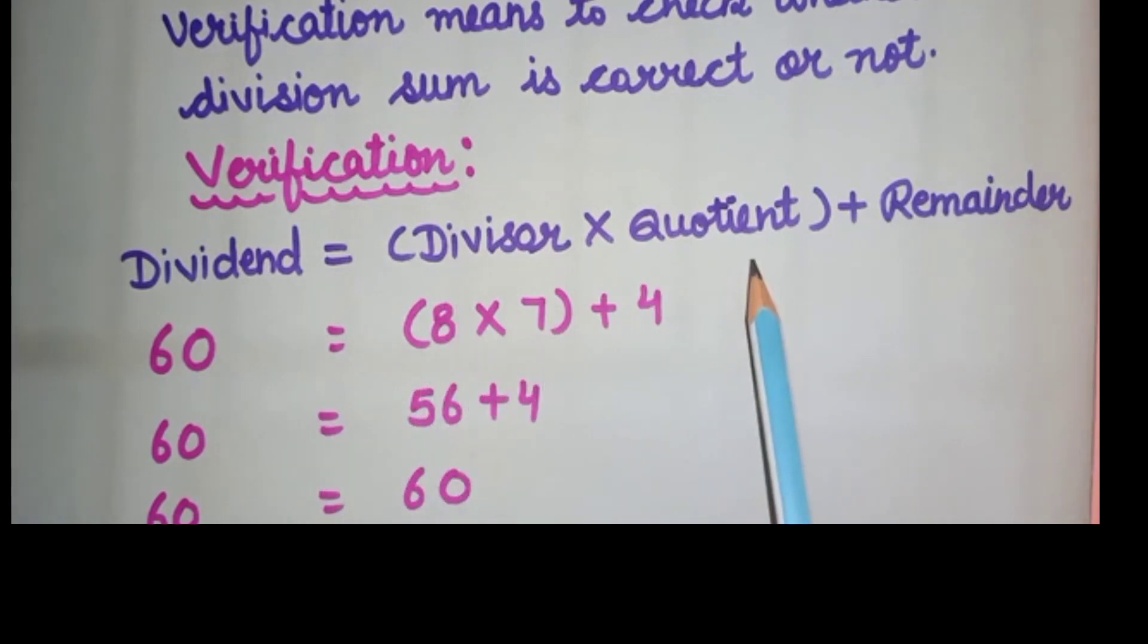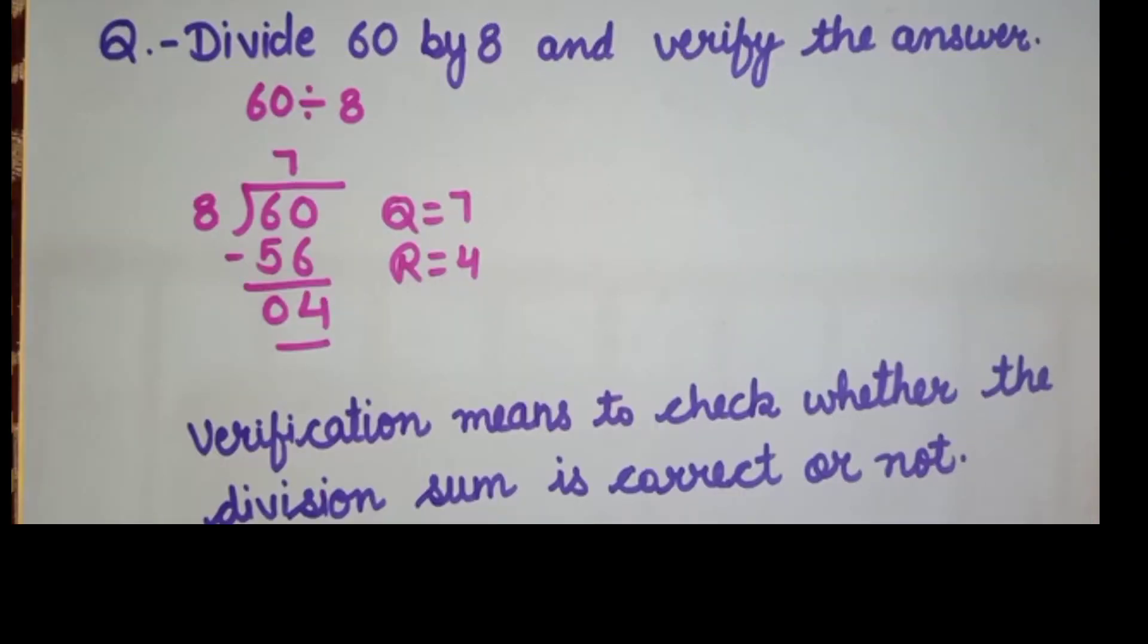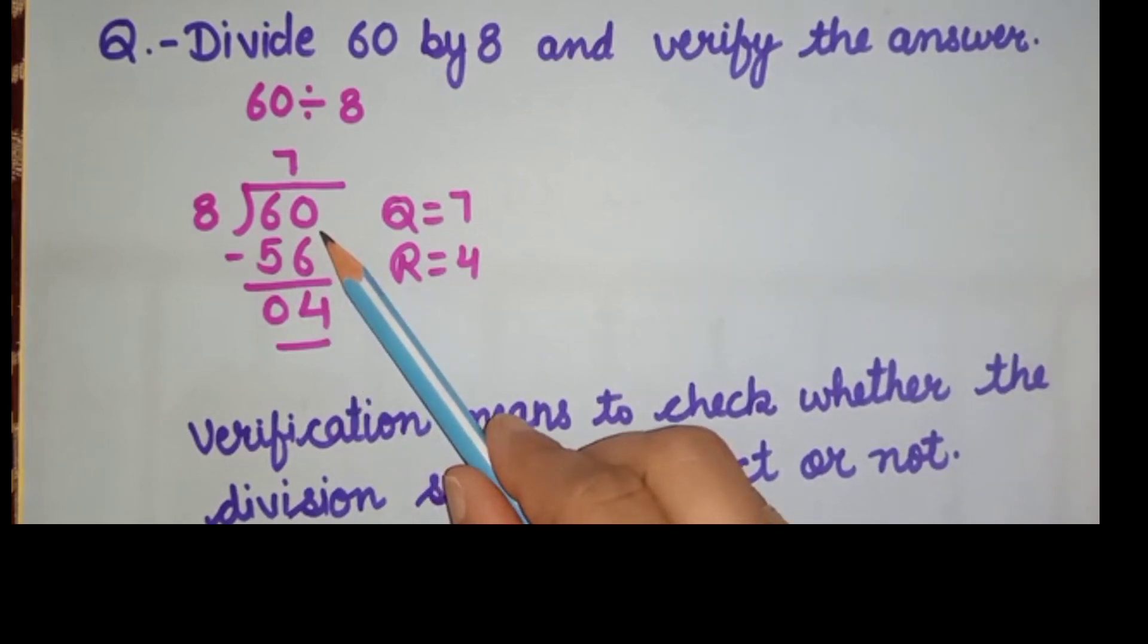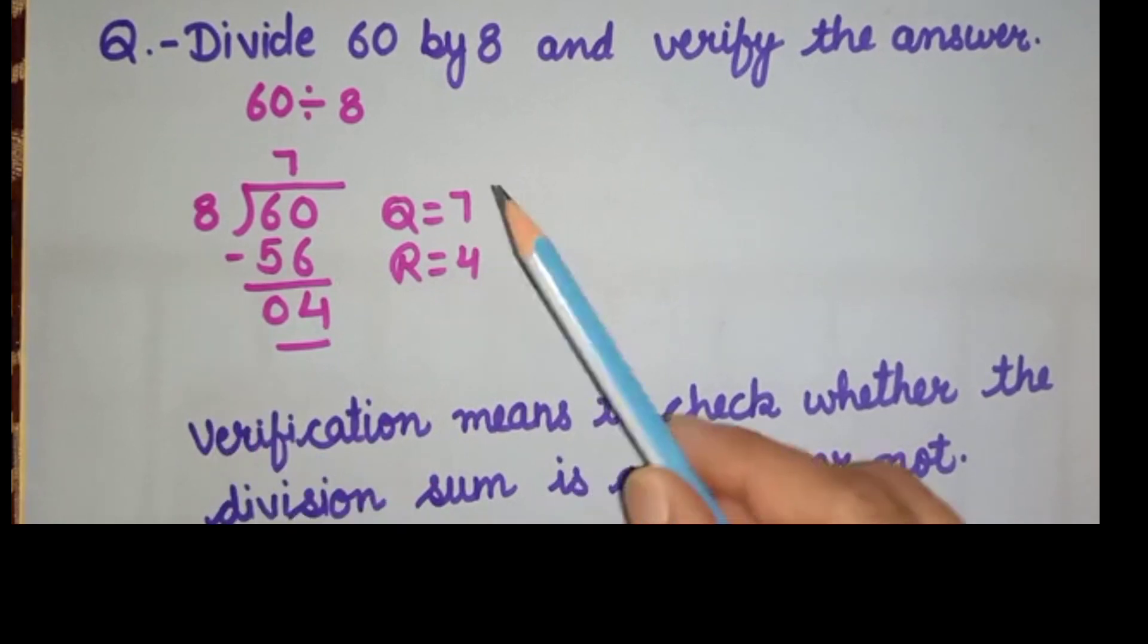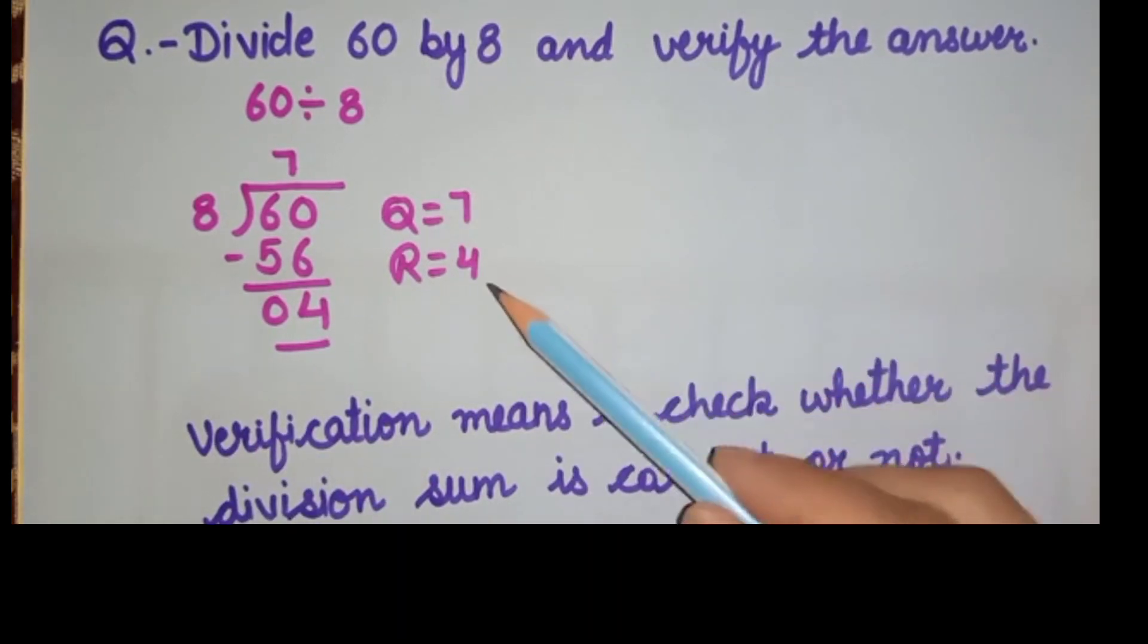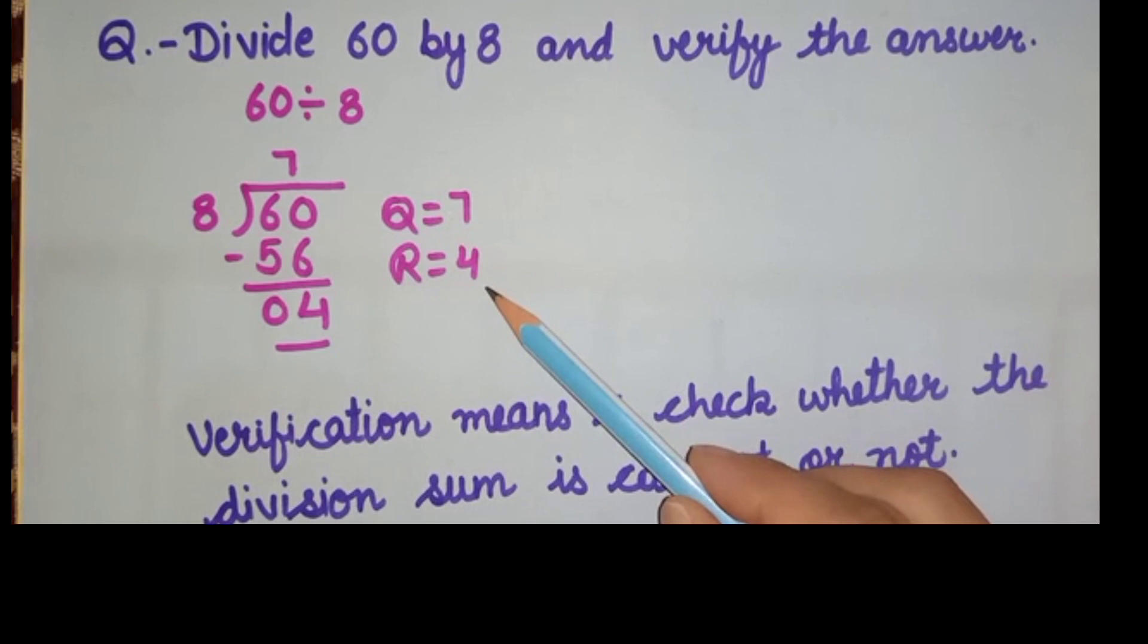Now, after writing the formula, we will just put the values. As we know that in the solved division sum, the dividend is 60 and divisor is 8, quotient is 7 and the remainder is 4. Now we will put this value in our formula.